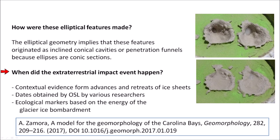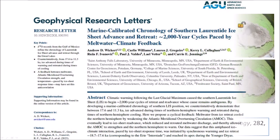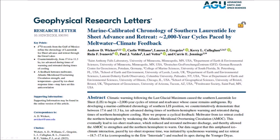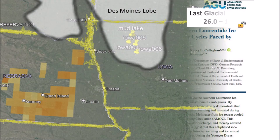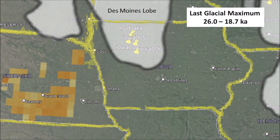The date of the extraterrestrial impact can be deduced from contextual evidence from advances and retreats of the ice sheets, from dates published for the bays by various researchers, and from ecological markers based on the energy of the glacier ice bombardment. The 2023 paper by Andrew Wickert and seven co-authors provides maps of the ice coverage that can be used to deduce the time of emplacement of the Carolina Bays. By overlaying a semi-transparent image of the last glacial maximum from Wickert, we can see that many Carolina Bays in Iowa are in the area covered with ice from 26,000 to 18,700 years ago by the Des Moines Lobe of the Ice Sheet.